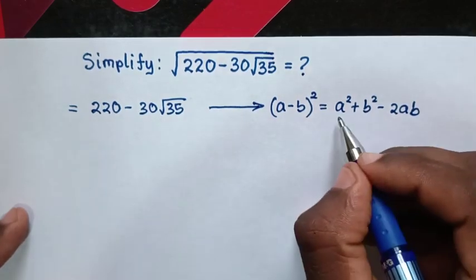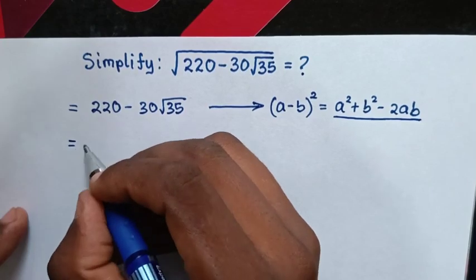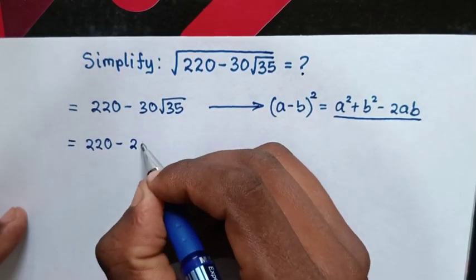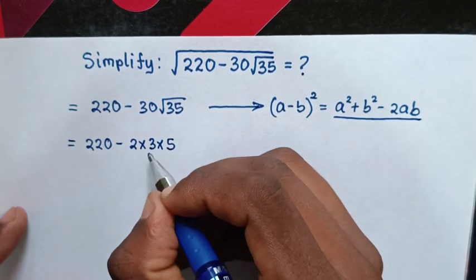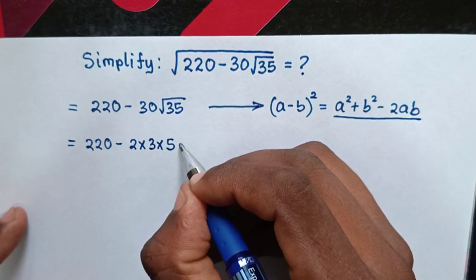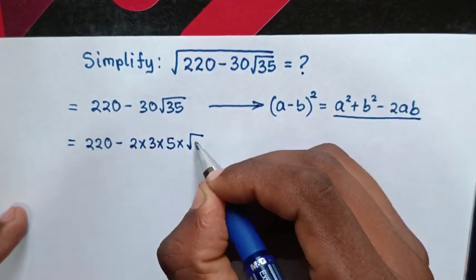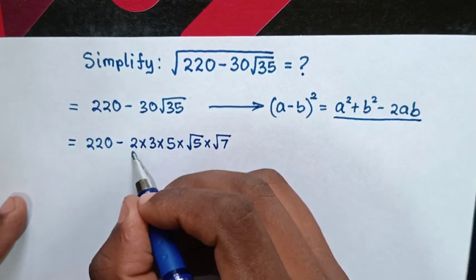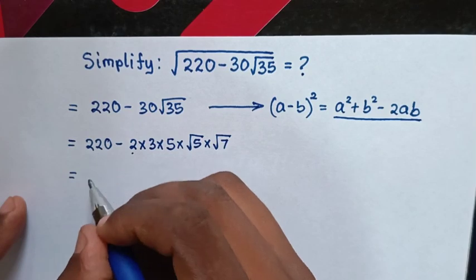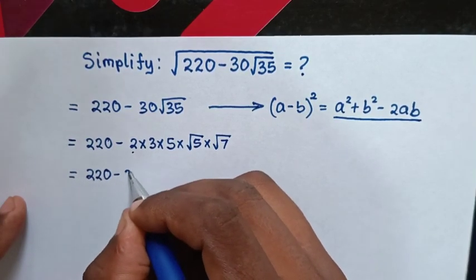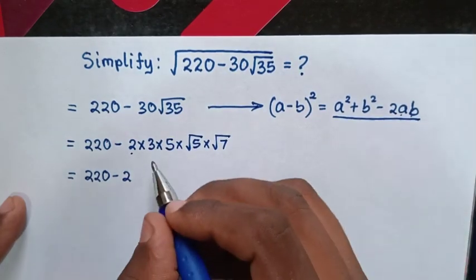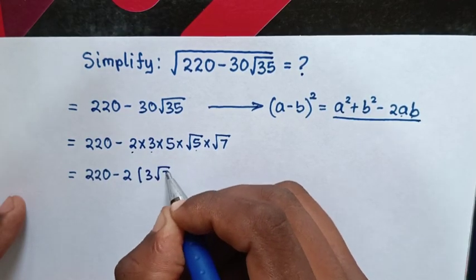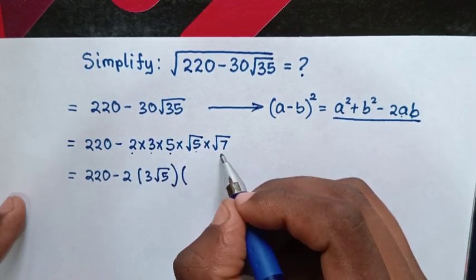So for this expression to match that form, we simplify: 30 is 2 times 3 times 5, and 3 times 5 is 15, and 15 times 2 is 30. Times square root of 35, which is square root of 5 times square root of 7. To compare our equation with the rule, here we have negative 2, so our equation will be equal to 220 minus 2 times a times b, where a is 3 square root of 5 and b is 5 square root of 7.